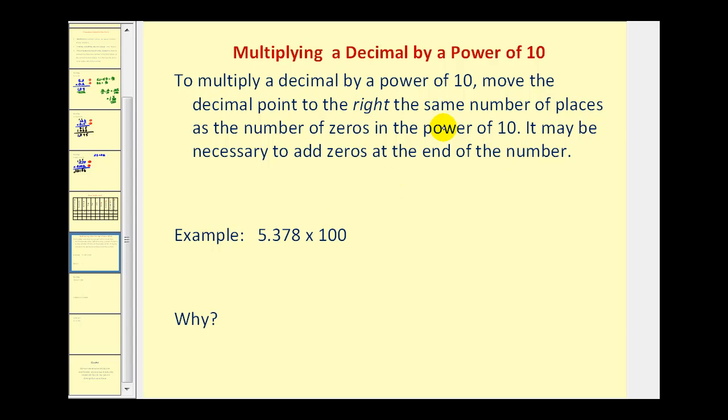For example, if we multiply 5.378 times 100, there are two zeros in this power of ten. So we can just take the decimal point and move it to the right two places.